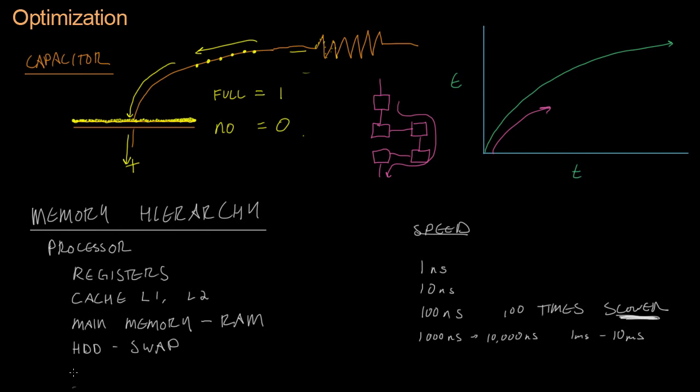And then below that we may have optical drives, like CDs that the Xbox uses to load from, or you may have network drives. So we may be downloading information over a network. And that's another order of magnitude slower, 100 milliseconds to maybe even a whole second in order to get data.